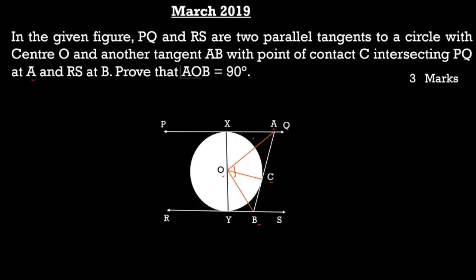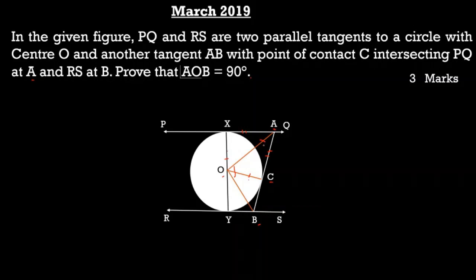Here, two tangents AX and AC are emerging from point A, so A is an external point to the circle. As we know from the theorem, the lengths of tangents drawn from an external point to a circle are equal. Hence, AX is equal to AC. Next, OX and OC are radii of the circle, so OX and OC are equal, and OA is the common side. By SSS congruence criteria, triangle OAX and triangle OAC are congruent. By CPCT, angle OAX is equal to angle OAC. Similarly, triangle OCB is congruent to triangle OBY.